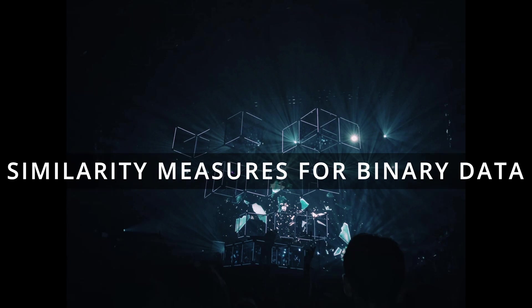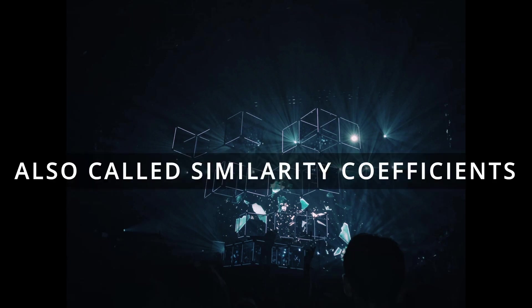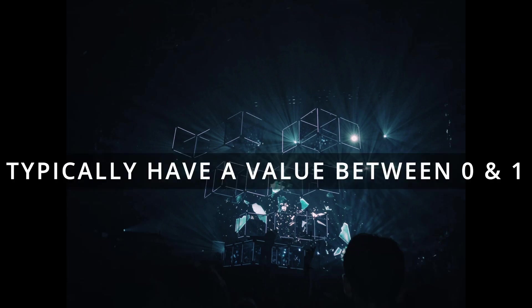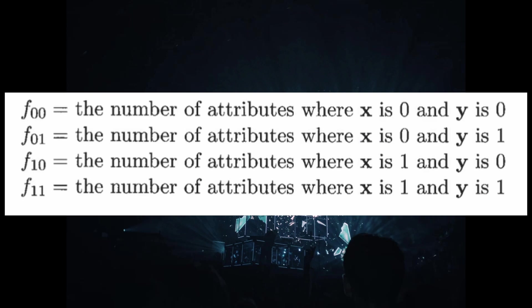Let's talk about similarity measures for binary data — also called similarity coefficients — which typically have a value between zero and one. Comparison between two binary objects uses four quantities: f00, the number of attributes where both x and y are zero; f01, where x is zero and y is one; f10, where x is one and y is zero; and f11, where both values are one.